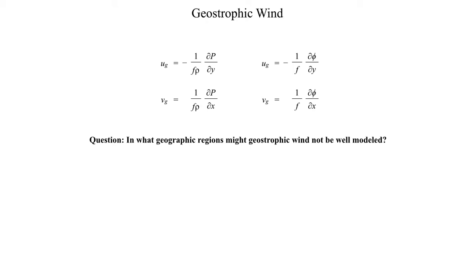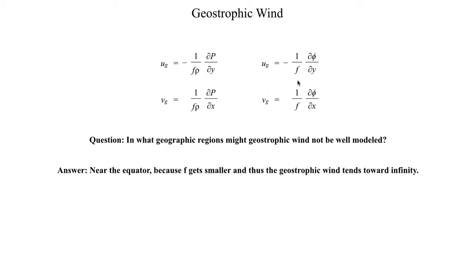Let me pose the following question: in what geographic regions might geostrophic wind not be well modeled? Feel free to pause the video and think about it. The answer lies in the fact that we have this 1 over Coriolis parameter in both forms of the geostrophic wind. As you get closer towards the equator, the Coriolis parameter goes to 0, which means the right-hand side tends toward positive or negative infinity. We don't normally observe infinitely strong winds at the equator, so the geostrophic wind equations don't apply well near the equator or in the subtropics — between 23.5 degrees north and 23.5 degrees south.